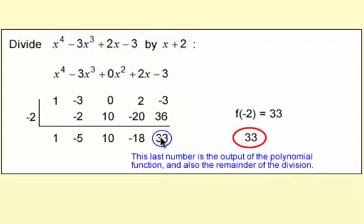Now, in this case, you have the output of the function, but it's also the remainder of the division. So when we divide this polynomial by x plus 2, what we're really saying is we get a remainder of 33 right here.